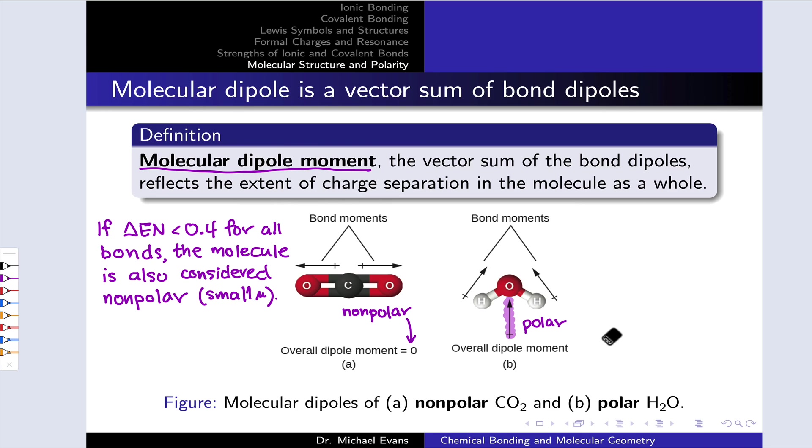I'm going to say that if the difference in electronegativity is less than 0.4 for all the bonds in the molecule, you're looking at a non-polar molecule overall, even if there is a slight bond dipole associated with some of the bonds.